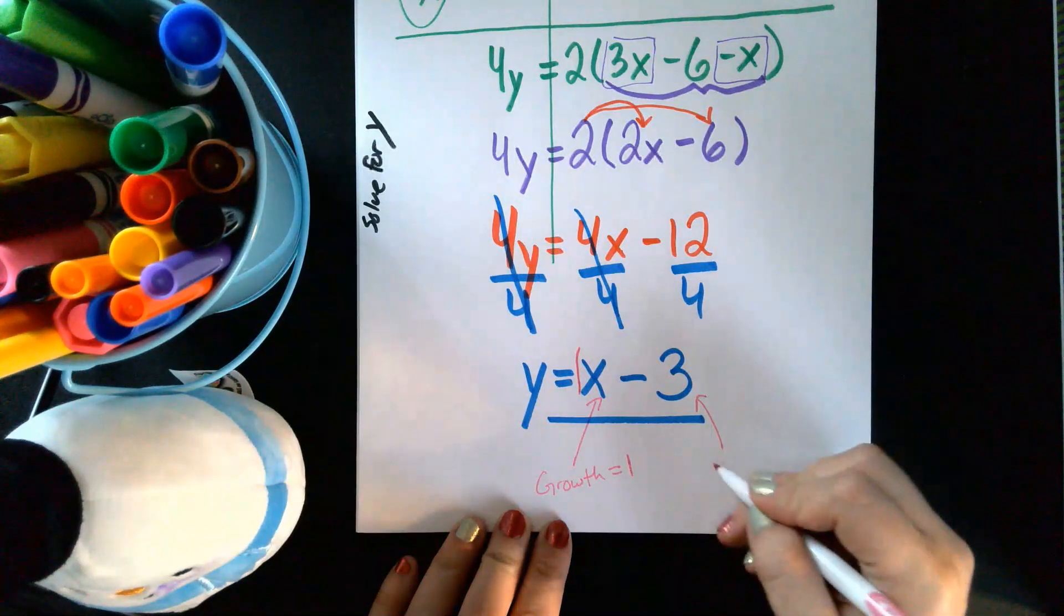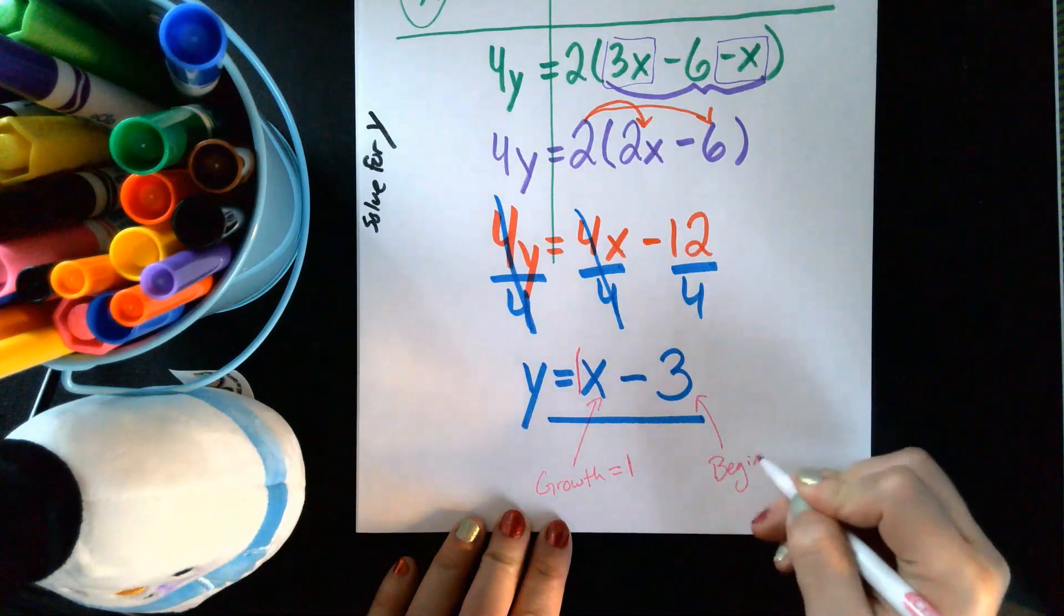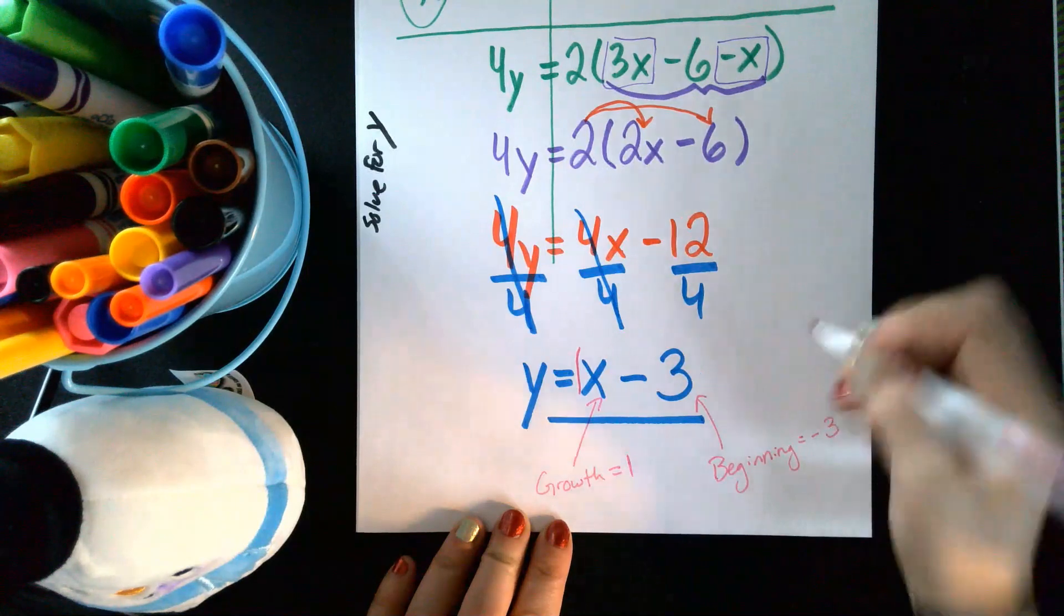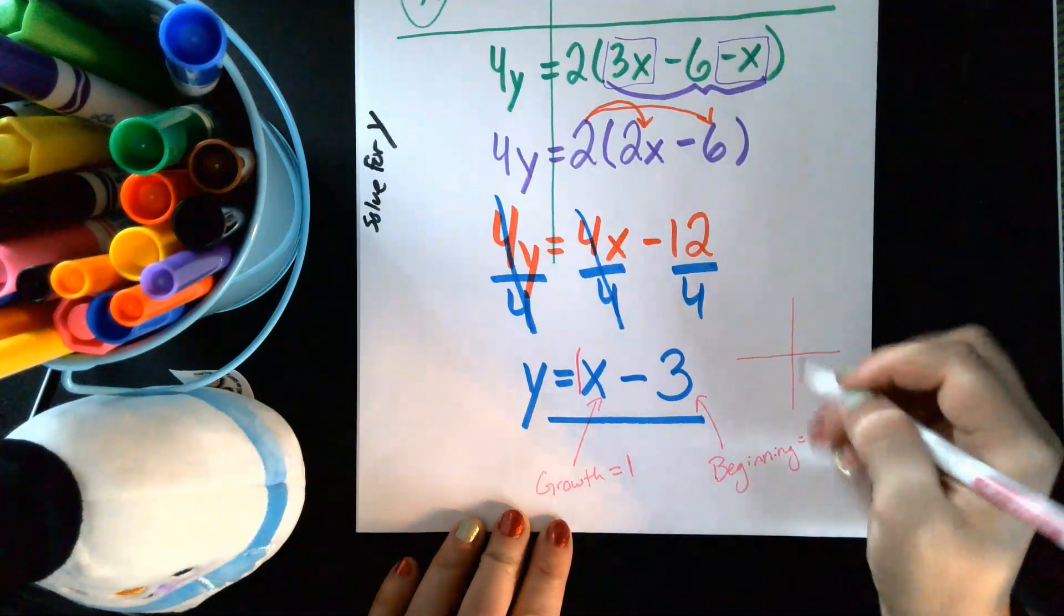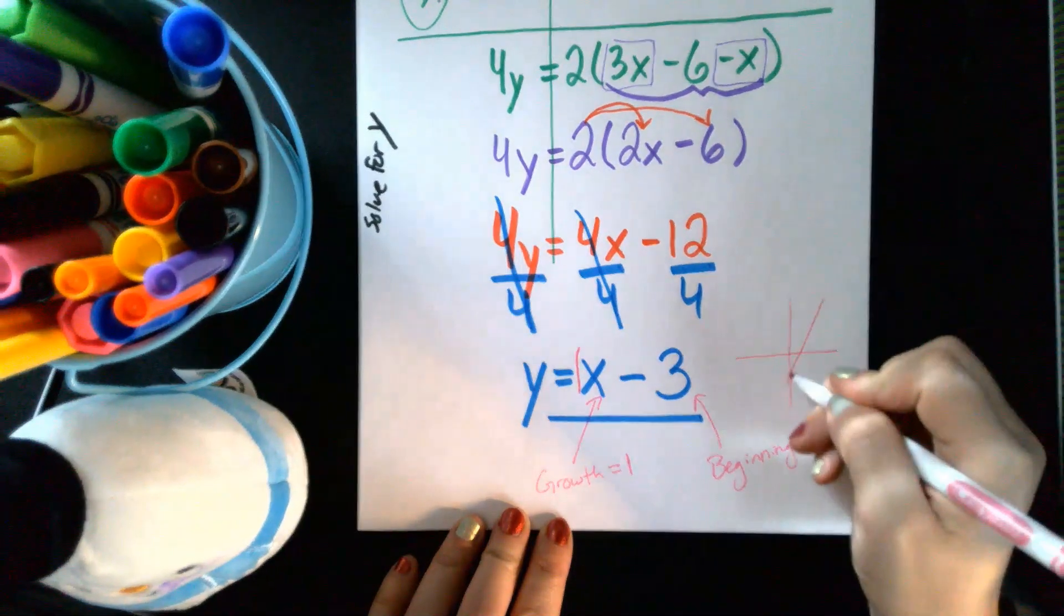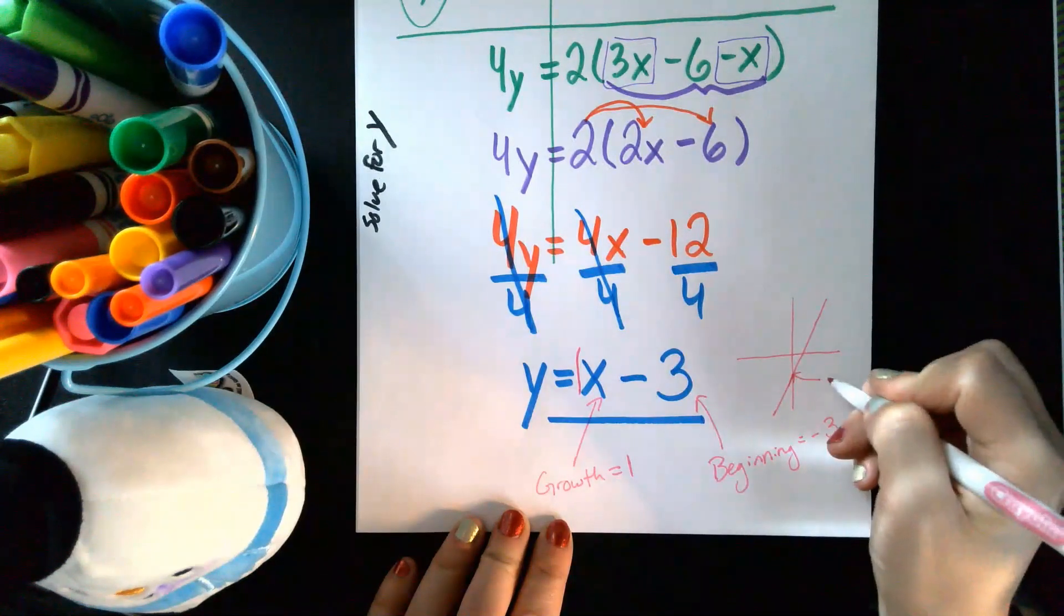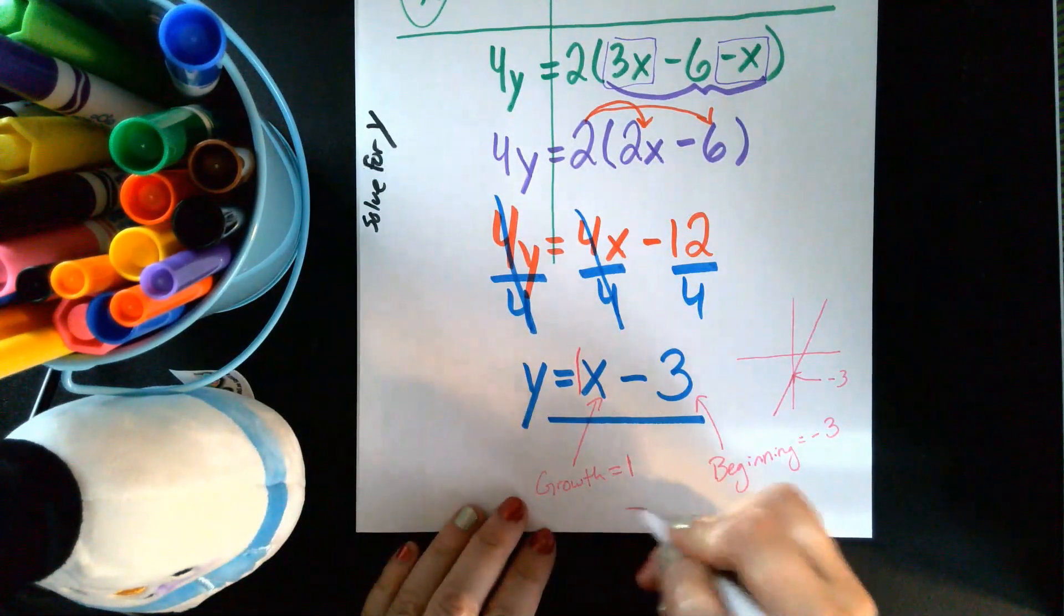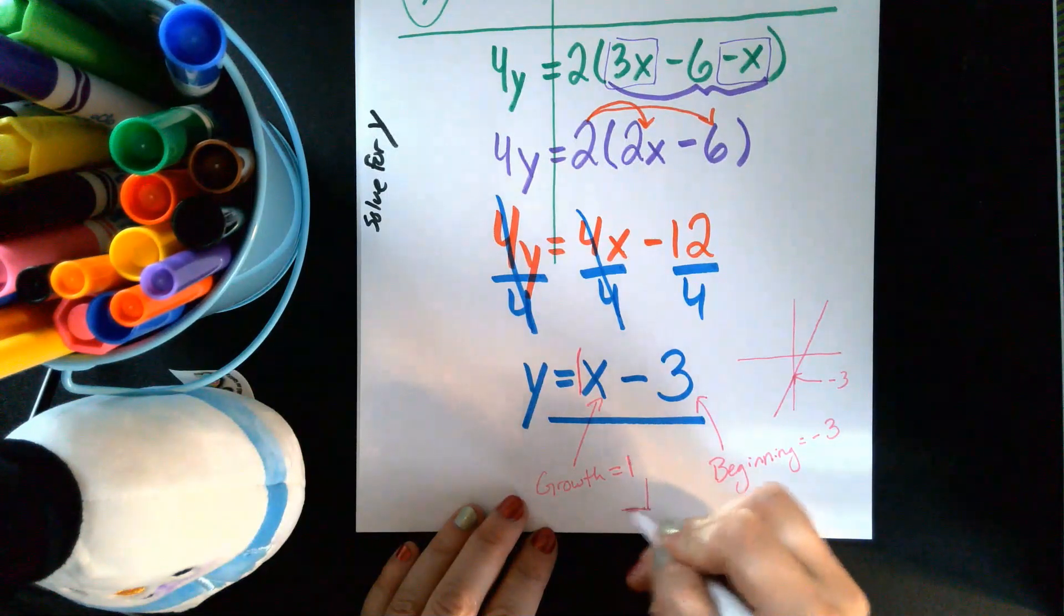So if I was on a graph that means my line would cross about negative three and this would mean that my growth triangle is one by one. So over one up one, over one up one, over one up one.